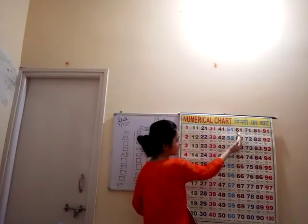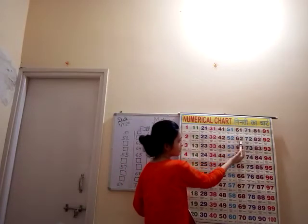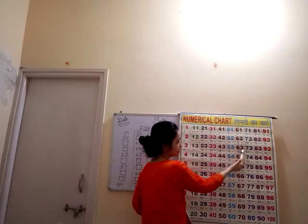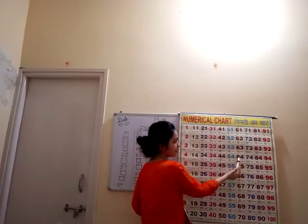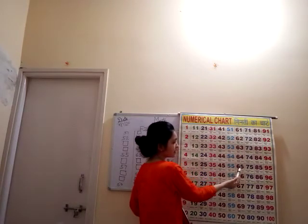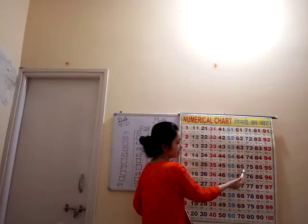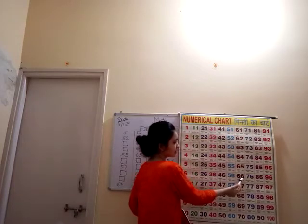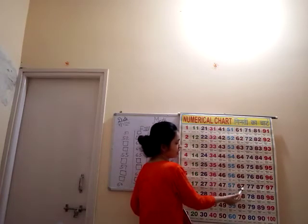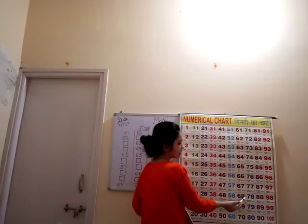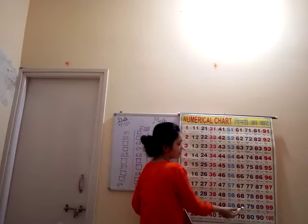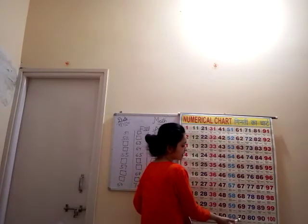60 ke bad? 6, 1, 61. 6, 2, 62. 6, 3, 63. 6, 4, 64. 6, 5, 65. 6, 6, 66. 6, 7, 67. 6, 8, 68. 6, 9, 69. 69 ke bad? 7, 0, 70.